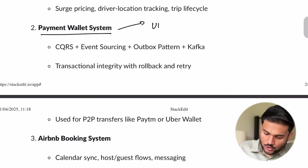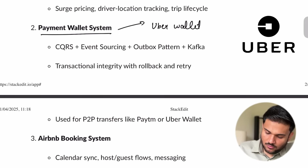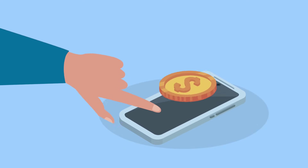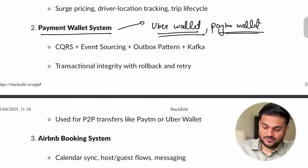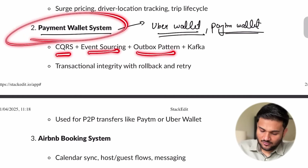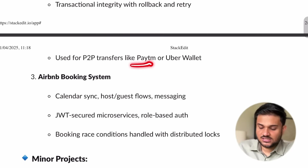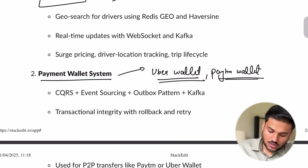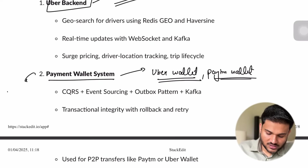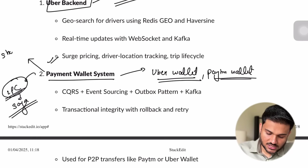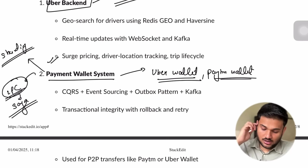Then there is an important project that is going to be a payment wallet system — very similar to what you see as Uber wallet or Paytm wallet. A lot of applications have their own wallet system, and this is going to be a very good playground because we are going to see CQRS, event sourcing, and the outbox pattern with the payment wallet system. We are going to see how transactional integrity can be implemented, how transfers actually work. We are going to see how exactly two-phase commit works, and how instead of two-phase commit, if you use Saga, how things can work for you. We'll also talk about what should be the sharding strategy for your database in a highly scalable architecture.